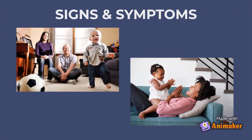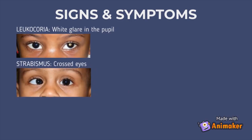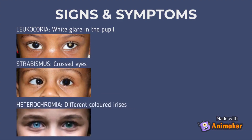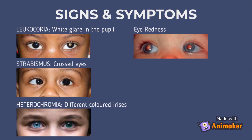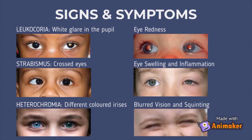The initial detection of retinoblastoma usually begins when parents realize there is something wrong with their child's eyes. Some common signs that parents may notice are leukocoria, which is a white glare in the pupil; strabismus, which is eyes looking in different directions; heterochromia, which is different colored irises; eye redness; eye swelling and inflammation; blurred vision and squinting; and even pain in the eyes.